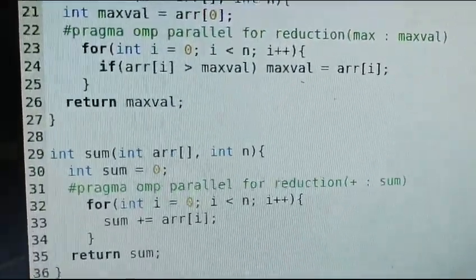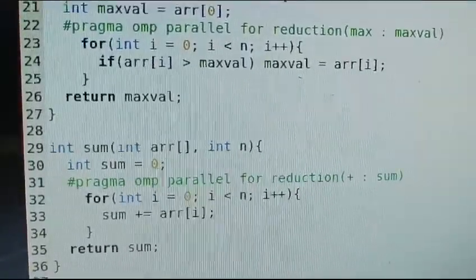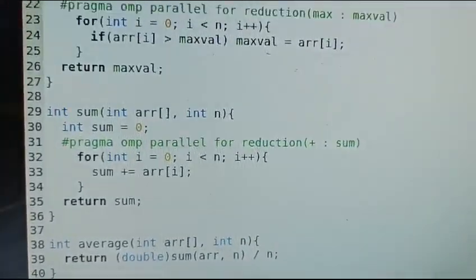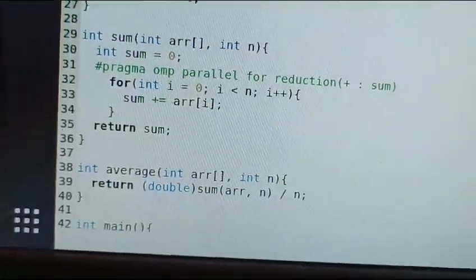Once the loop is completed, all the sum values are stored into the sum variable and it returns the sum value. Next is the average function, which just returns the sum value divided by n as the answer.